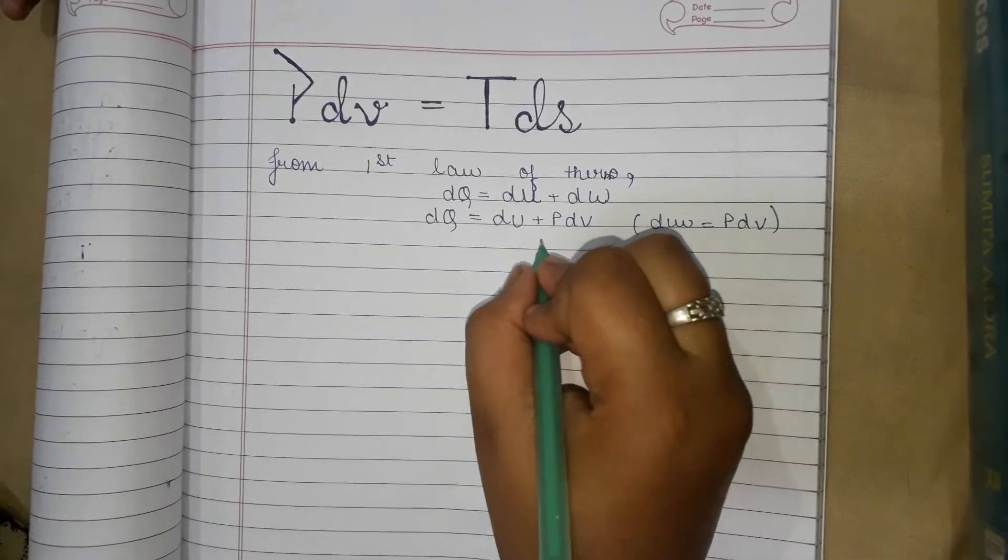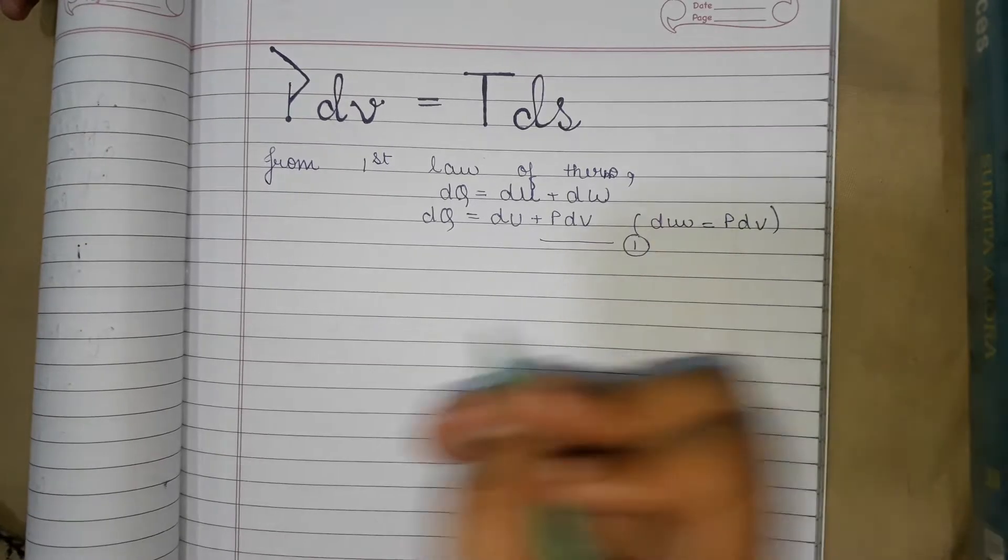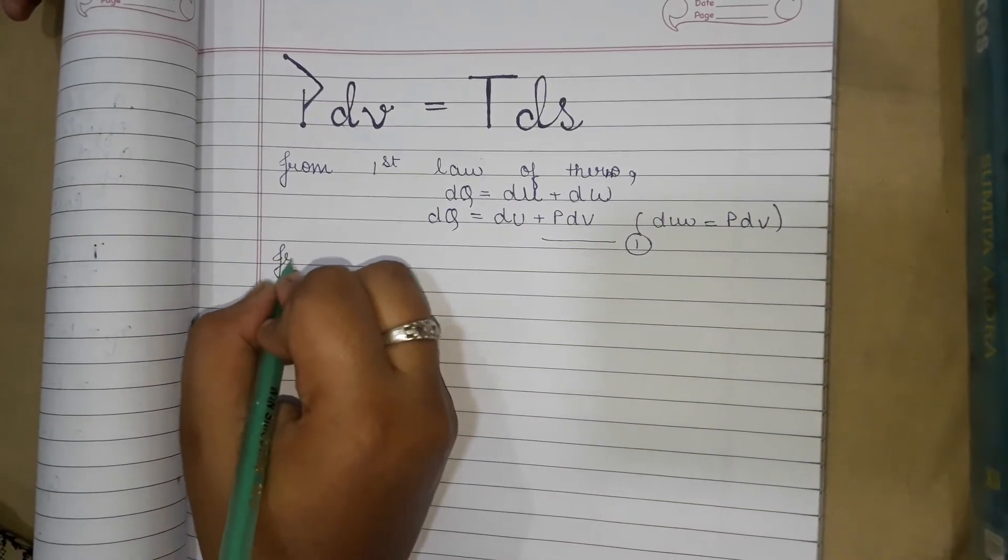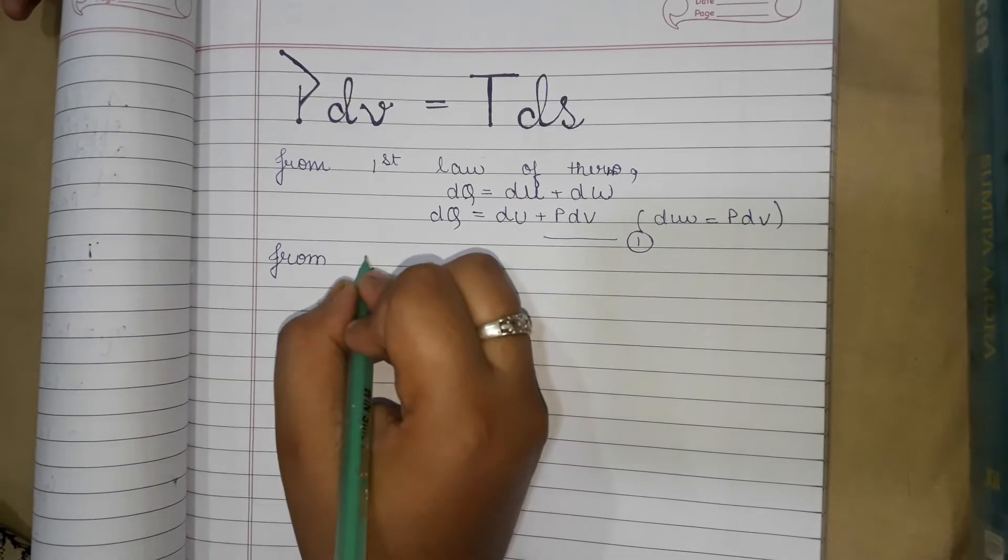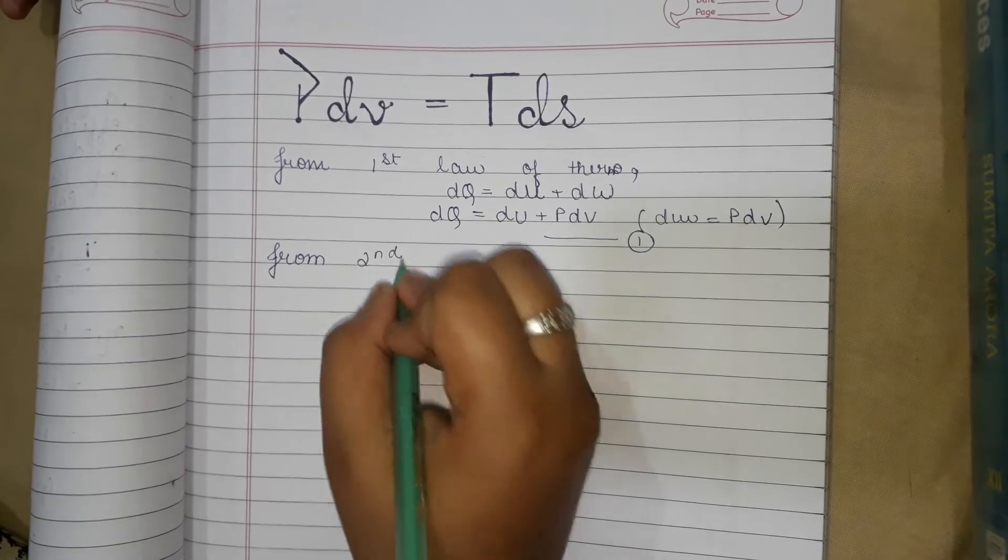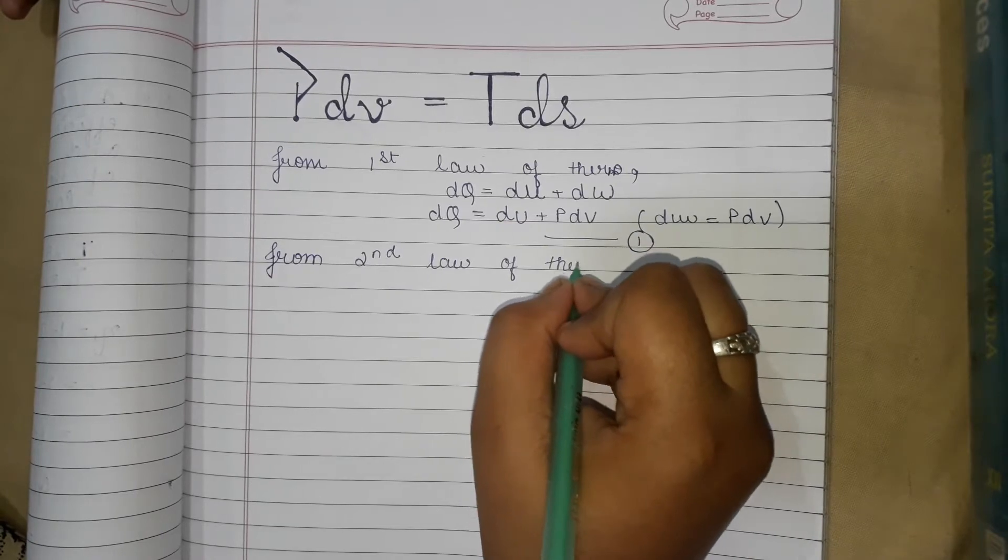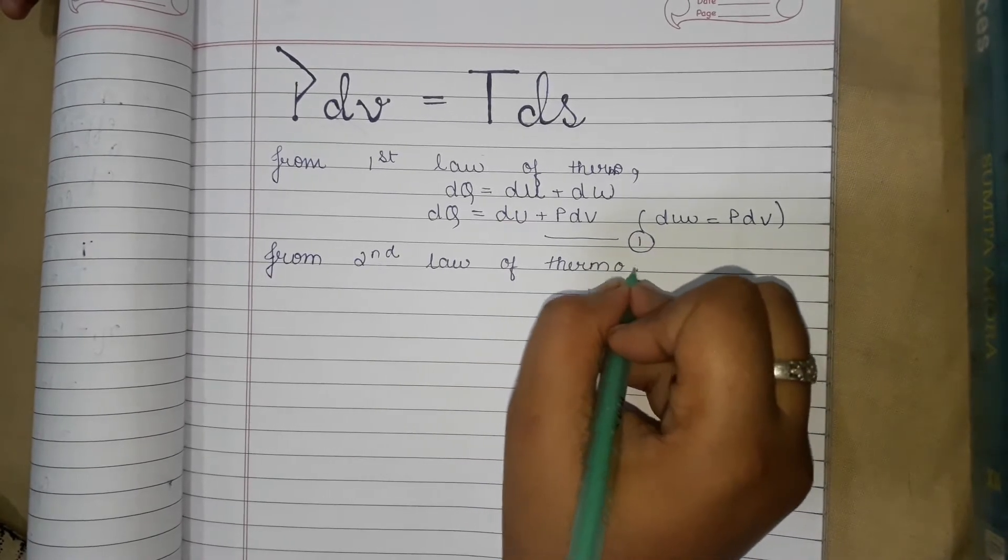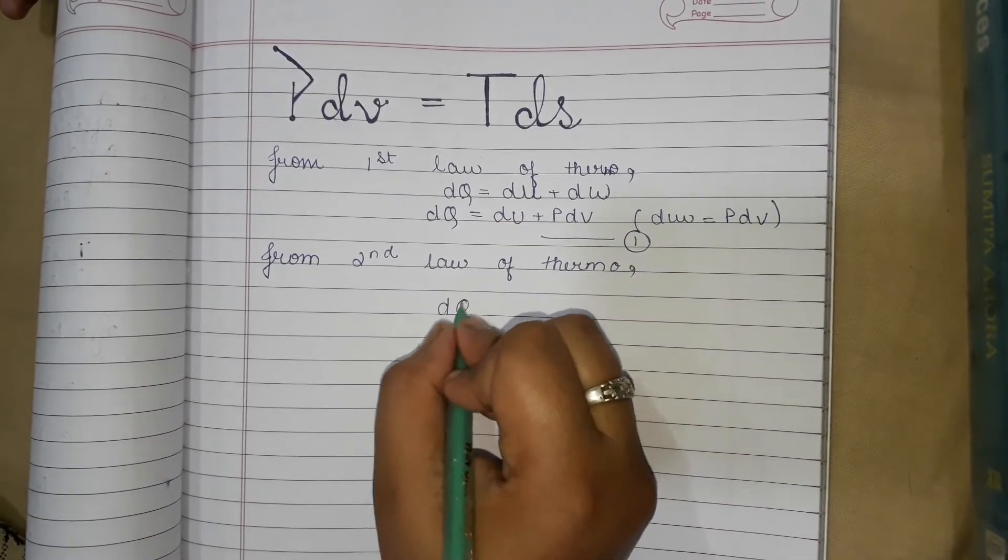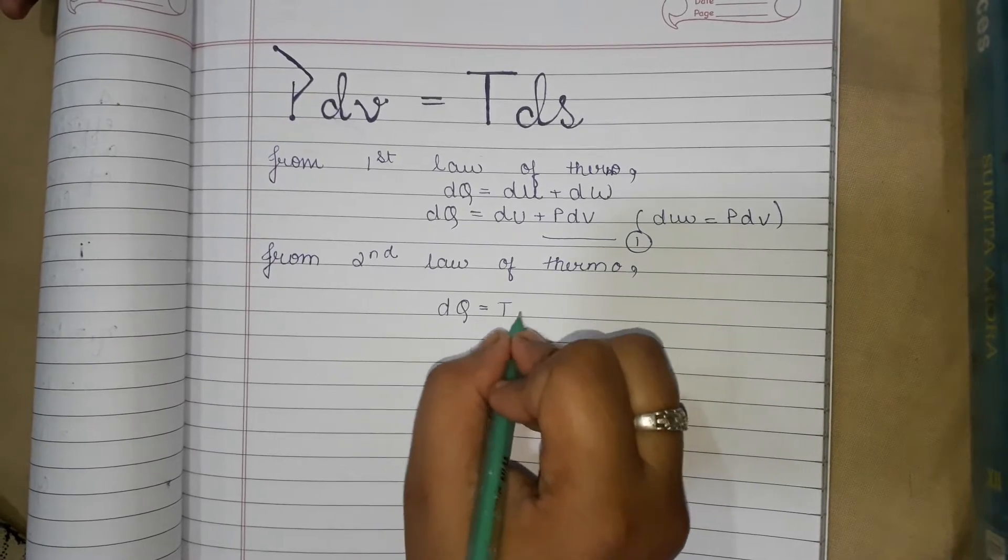And from the second law of thermodynamics we have dq is equal to TdS.